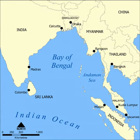Coastal regions bordering the Bay of Bengal are rich in minerals. Sri Lanka, known as Sarandib or Ratna Dweepa meaning gem island, yields amethyst, beryl, ruby, sapphire, topaz, and garnet. Garnet and other precious gems are also found in abundance in the Indian states of Odisha and Andhra Pradesh.